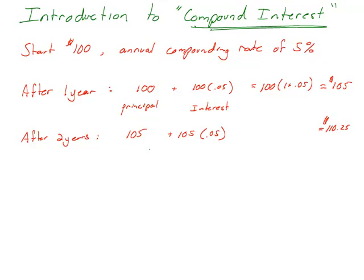We know we're going to get $110.25 after the second year, but I'm looking for a pattern. So I'm going to do this same approach. This 105 factors out and that leaves me with 1 plus 0.05. And I see a little bit of similarities between these two.